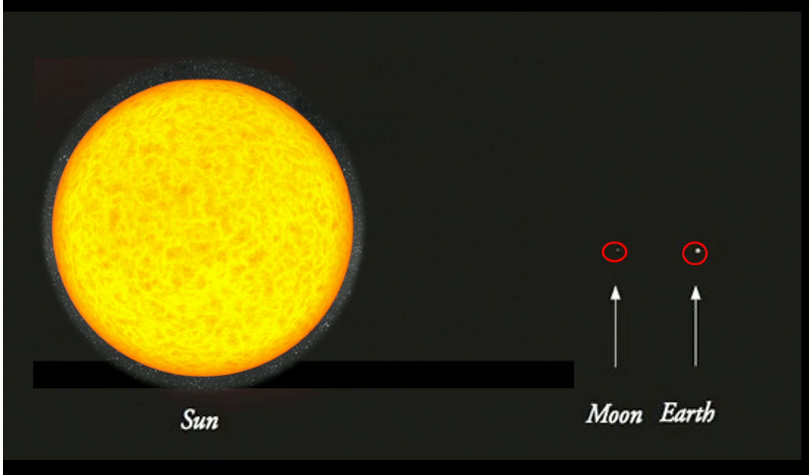Well, guess what? Here's the sun, there's the little tiny moon, and there's the earth. How in the world could that little moon block out the big old sun? How does that happen that you can have an eclipse?